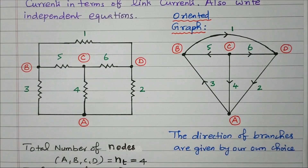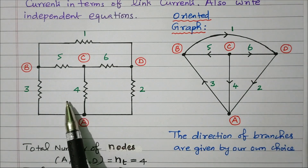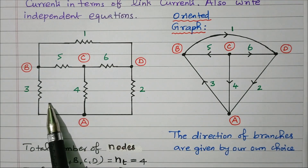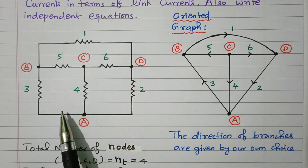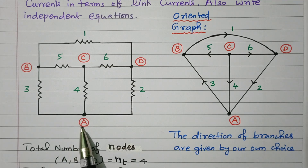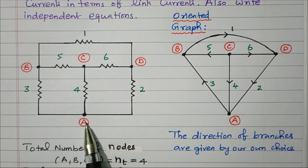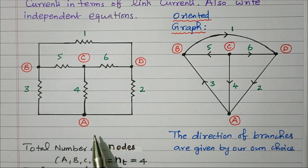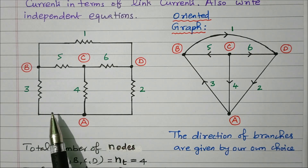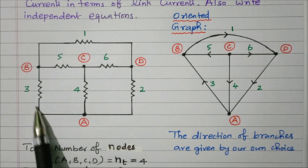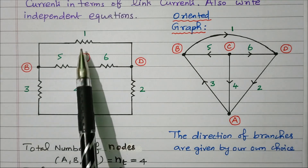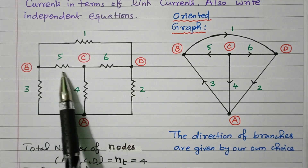Now we will refer the given network. This is the given network. A network is nothing but an interconnection of elements. Here six resistors are interconnected, called a network, having four nodes: A, B, C, D. A node is nothing but a connection of elements. At node A, three resistors are connected. Six branches are available — a branch is nothing but an element connected between nodes. One, two, three, four, five, six: six branches are available.